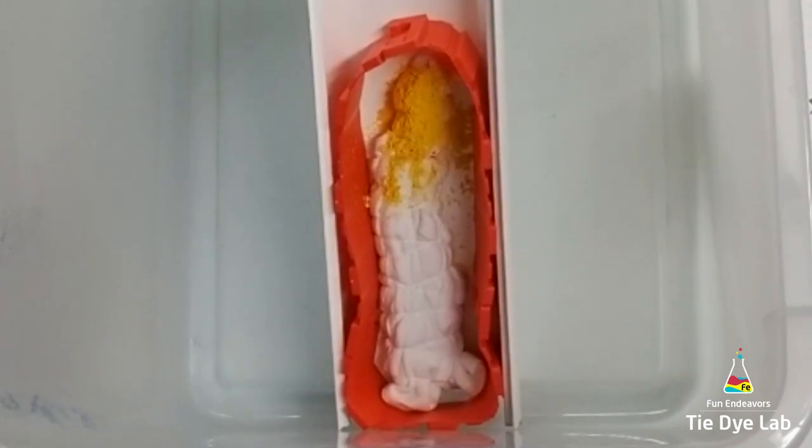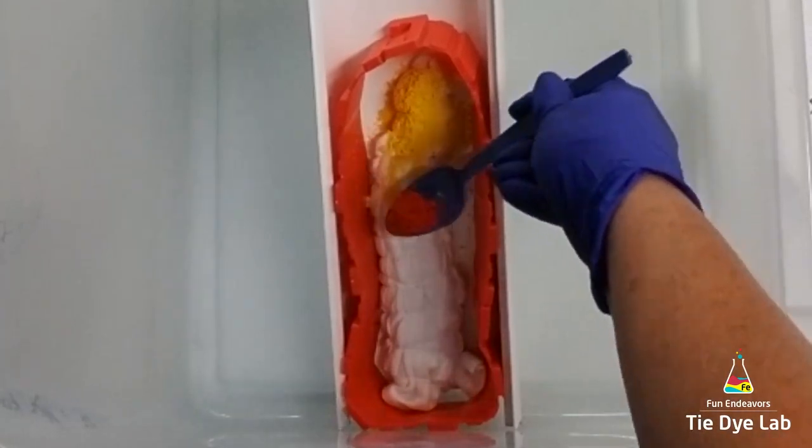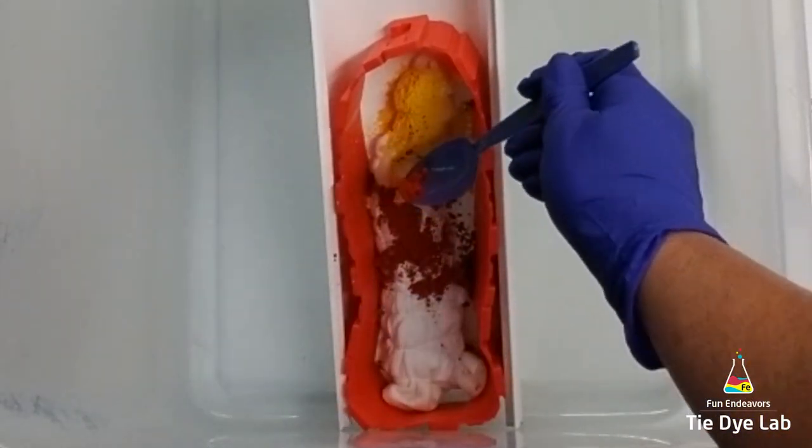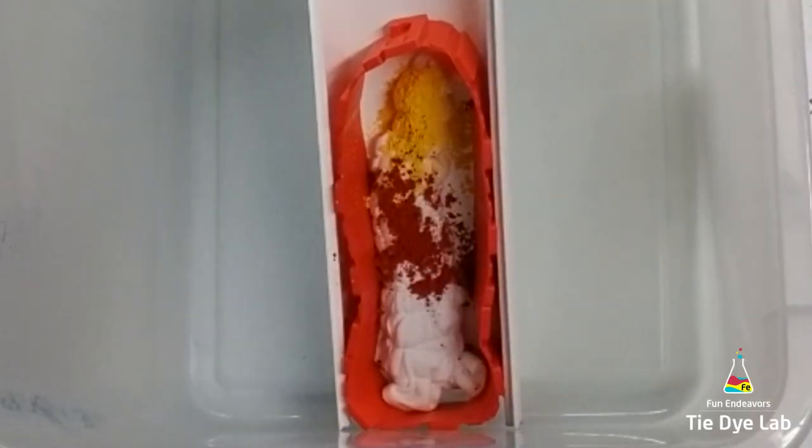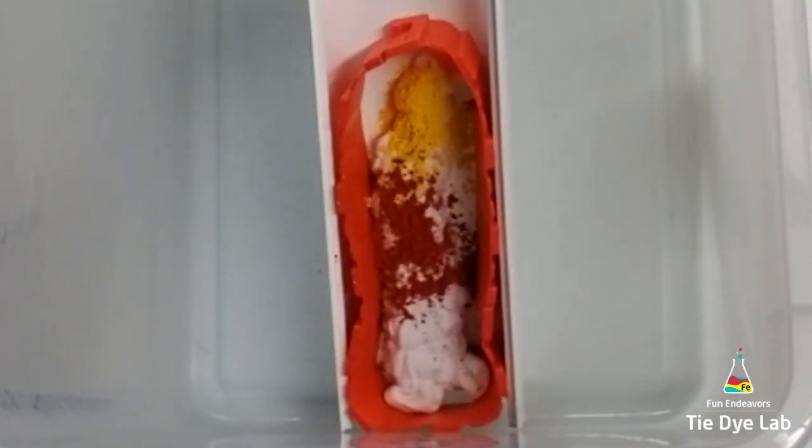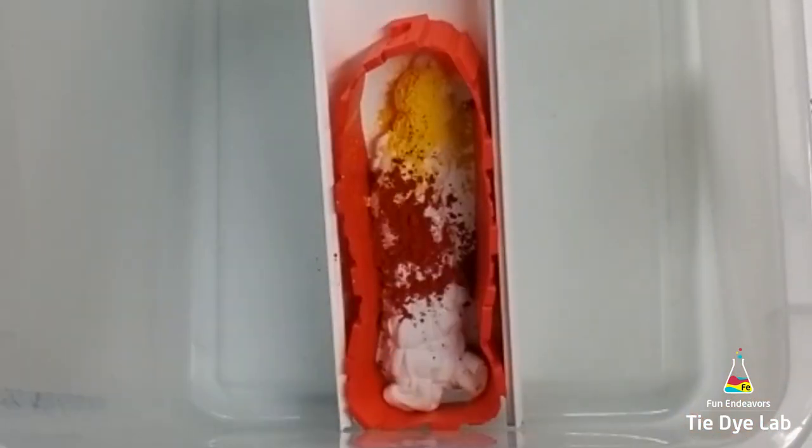Then I'm going to apply Lemon Yellow from Grateful Dyes at the very top of my onesie, followed by Custom Colors Orange, and then Red Number Nine from Grateful Dyes at the very end.